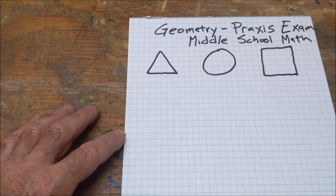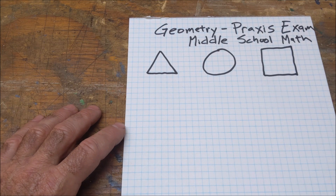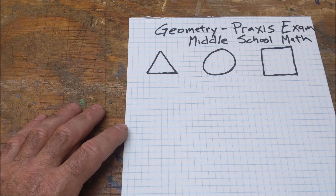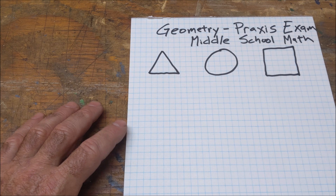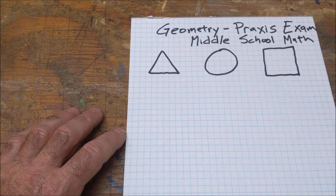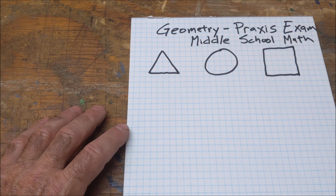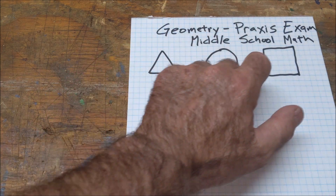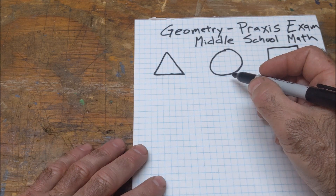Hey, Jonathan here at Colfax Math. I had a request for reviewing some big geometry ideas on the Praxis exam for middle school mathematics. I'm going to go over general geometry ideas that are probably good for any standard math test, aptitude test, or placement exam. I'm going to split it into three categories: triangles, circles, and quadrilaterals. I'm going to start with circles.